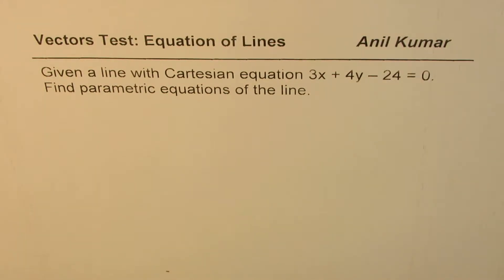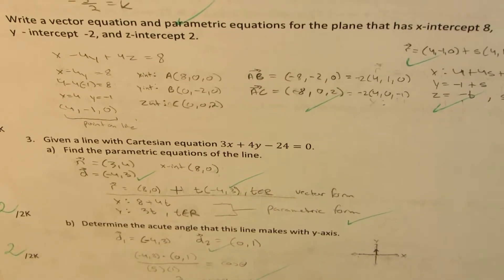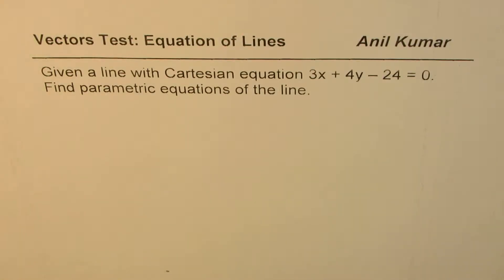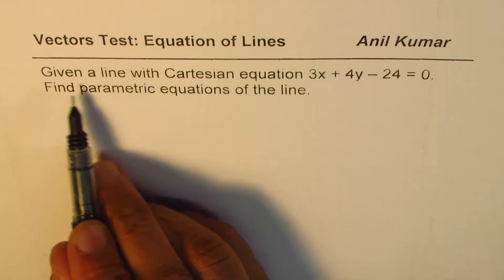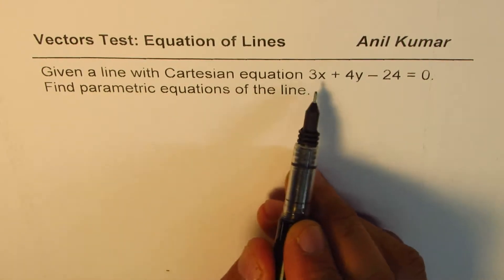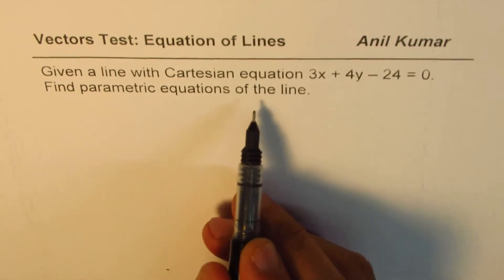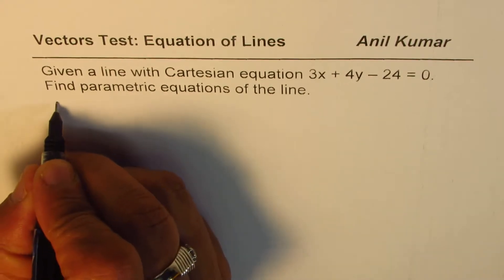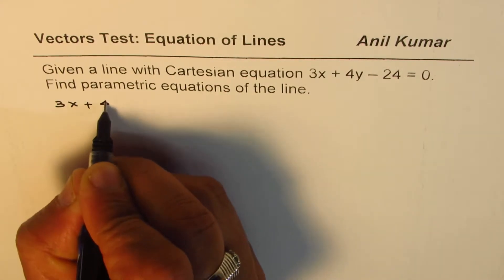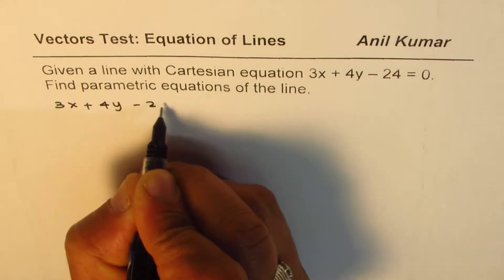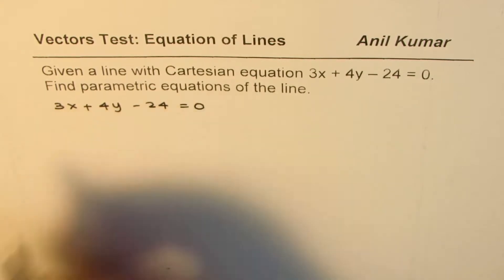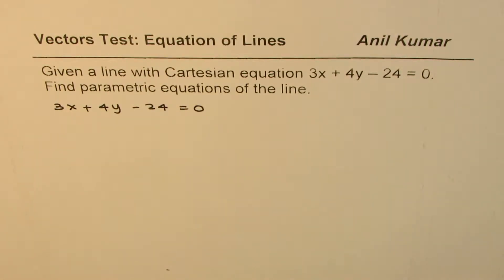I'm Anil Kumar, sharing with you test questions on vectors and equation of lines. This question is question number 3 in this test paper. Let us discuss how to solve such a question. Given a line with Cartesian equation 3x plus 4y minus 24 equals to 0, find the parametric equation of the line.